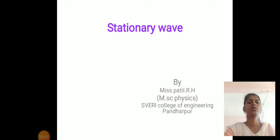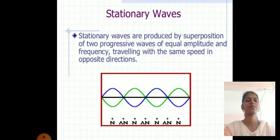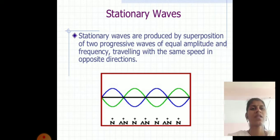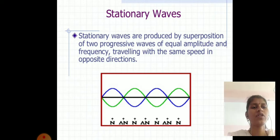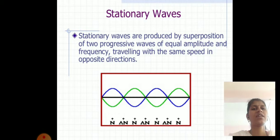Good afternoon. Today I am going to discuss stationary waves. Stationary waves are produced by the superposition of two progressive waves of equal amplitude and frequency, travelling with the same speed in opposite directions.